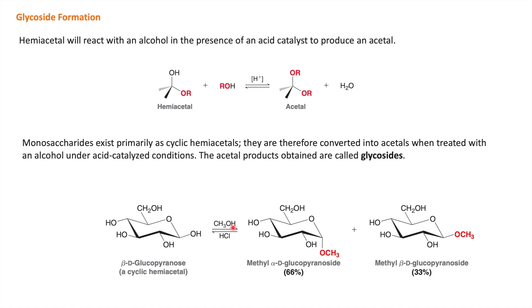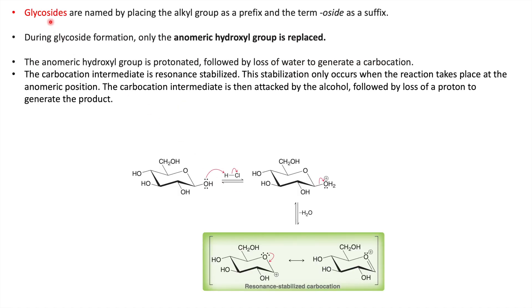When we treat glucopyranose with methyl amine, it gives an N-glycoside. In the O-glycoside, the linkage is through oxygen. Methyl alpha-D-glucopyranoside is obtained in 66% yield, and the beta-D-glucopyranoside is obtained in 33%. So now you know the term glycoside: alkyl glycoside has an alkyl group and a sugar group, while aryl glycoside has an aromatic group and a glycoside group.